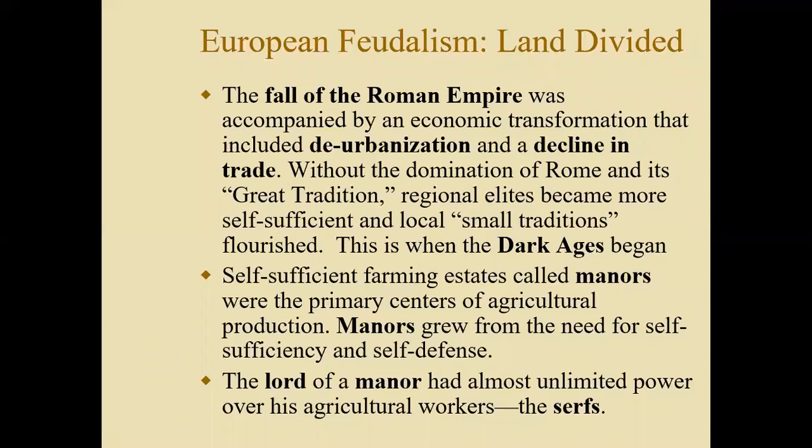We're looking at a time period between the years 1200 CE to 1450 CE, and one of the first things you'll notice on this slide is the word feudalism. Europe went through a period of transition after the fall of the Roman Empire in the year 476 AD. When the Roman Empire collapsed, it basically did away with any unifying centralizing force that Europe had. So Europe went from being centralized under the Roman Empire to becoming decentralized when it became a feudal system.